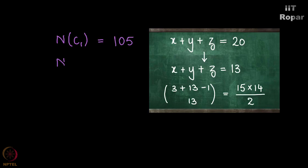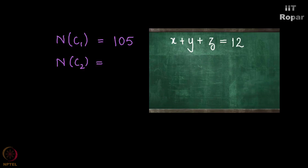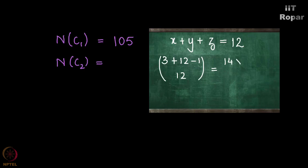n of C2 is the number of solutions for x plus y plus z equals 12 — I removed 8 from both sides. The number of solutions for this is 3 plus 12 minus 1 choose 12, which is 14 choose 12, which is 14 into 13 by 2. Cancelling 2 and 14 we get 91.